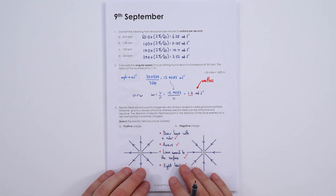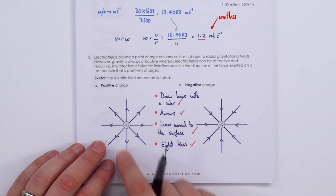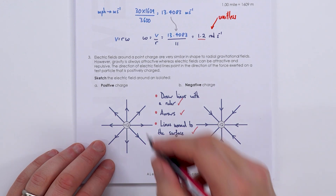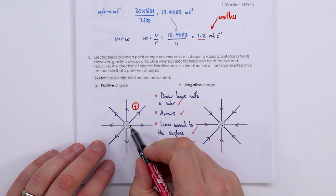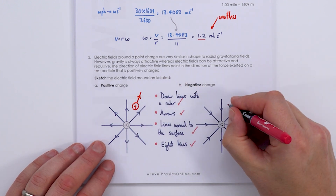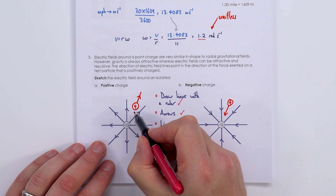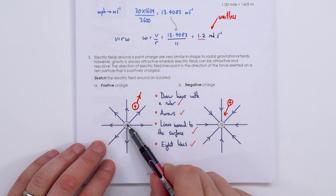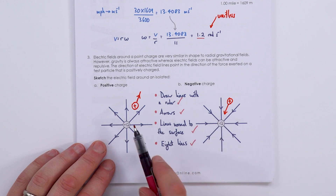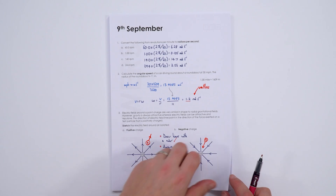Electric field lines around point charges: for a positive charge, lines point outward (a positive test charge would be repelled); for a negative charge, lines point inward (attracted). Draw with a ruler, put arrows on the lines, make them normal to the surface pointing toward the centre. Eight lines around each charge, consistent with the gravitational field line drawings.